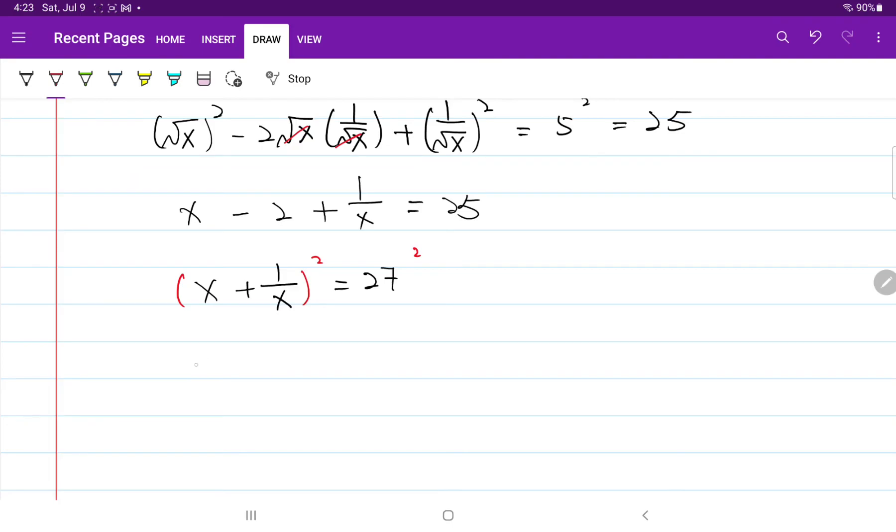And so now we have on the left-hand side, x squared plus 2x times 1 over x plus 1 over x squared is equal to 27 squared.